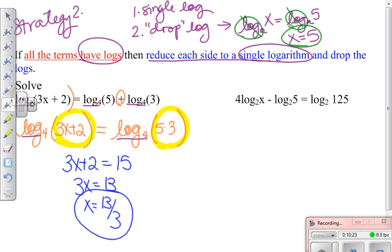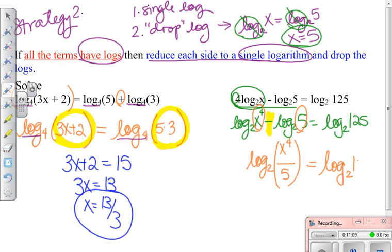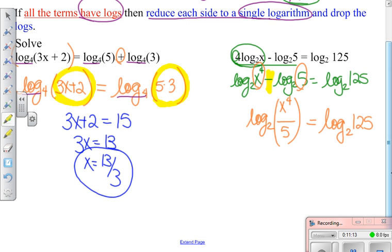Now in the next example, I have a couple of things going on over here. So the first thing I need to look at is this log. This 4 out here was an exponent, so my first step is to write log base 2 of x to the 4th minus log base 2 of 5 equals log base 2 of 125. Then subtraction came from a division problem, and so I can go ahead and write this as the log base 2 of x to the 4th divided by 5 equals the log base 2 of 125. These are both log base 2, so I can drop them off. And what I'm left with is x to the 4th over 5 is equal to 125.